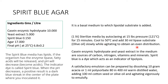Casein enzymic hydrolysate and yeast extract in the medium serve as sources of carbon, nitrogen, vitamins, and minerals. Spirit blue is a dye that acts as an indicator for lipolysis. A satisfactory emulsifier can be prepared by dissolving 10 g of acacia or 1 ml of polysorbate 80 in 400 ml warm distilled water, adding 100 ml of cottonseed or olive oil and agitating vigorously.